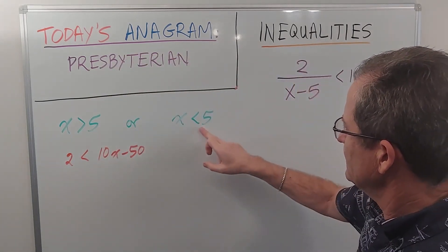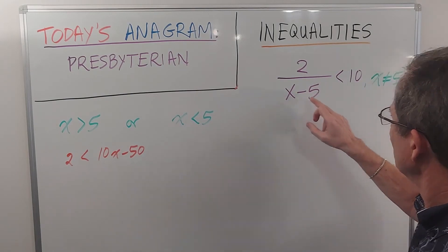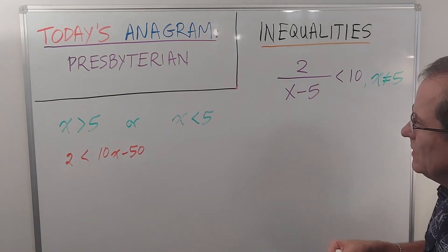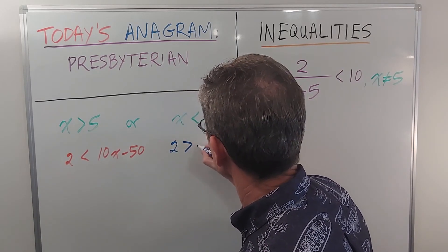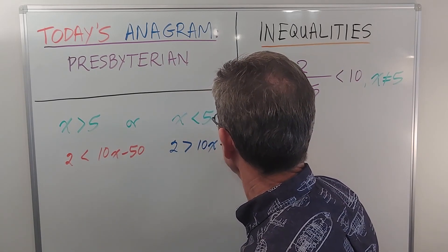And if x is less than 5, then this is negative. So when I multiply by x minus 5, I have to change that inequality, and I'll get 2 is greater than 10x minus 50.